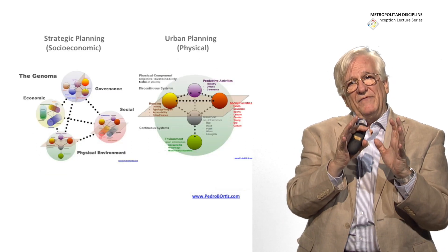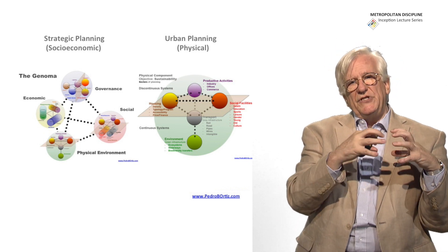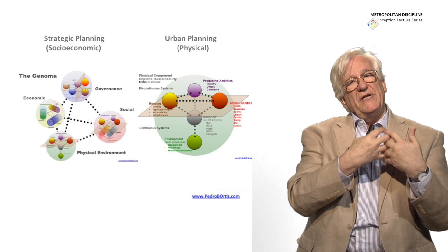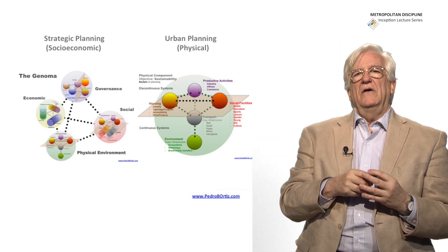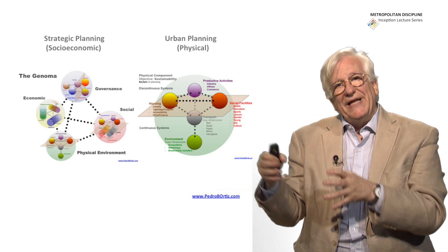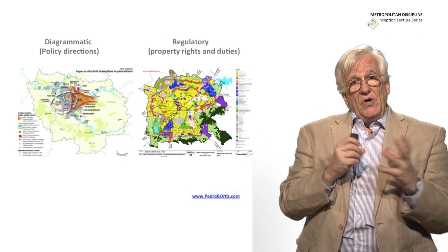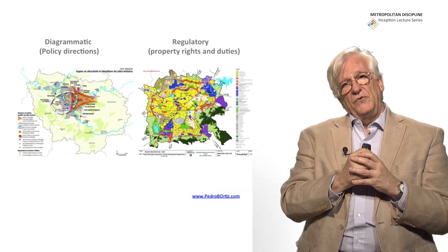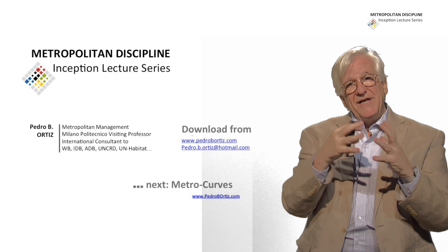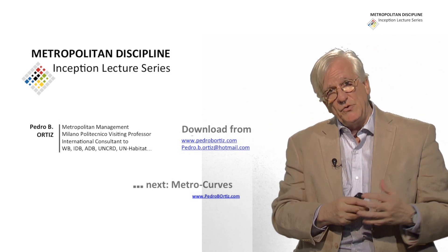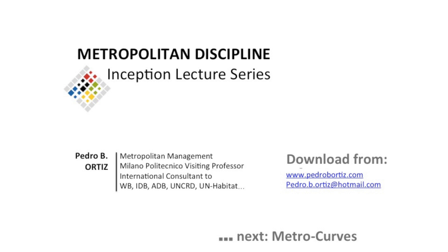We have this strategic component — how to relate all the elements of the genome together — which is the strategic approach for the metropolis, integrating all those elements. Then we go into the more structural planning of the metropolis, dealing specifically with the tangible elements of the physical environment. In future presentations, we will deal with specific techniques — next time we will see how the metropolis works with scientific and technical approaches to curves and the phenomena that occur in the metropolis. You can download these presentations from the links on the slide. Thank you.